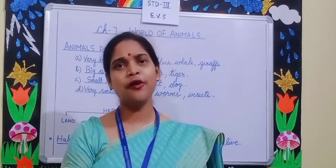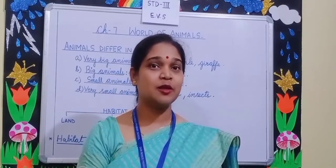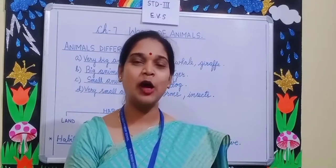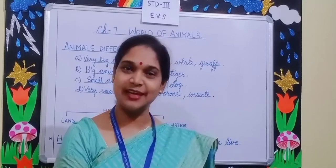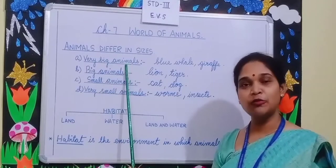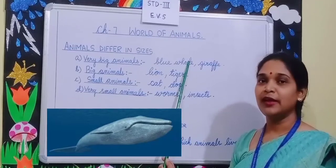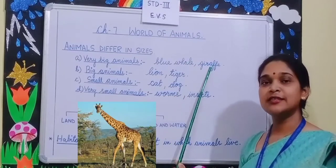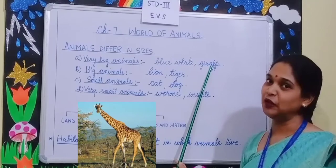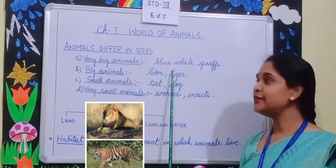Children, if you look around, you will notice that all animals are not of the same size. That means animals differ in sizes. Let's see how animals differ in sizes. There are some very big animals found on earth. Blue whale is the largest animal in water. Giraffe is the tallest animal on the earth. Some big animals are lion and tiger.